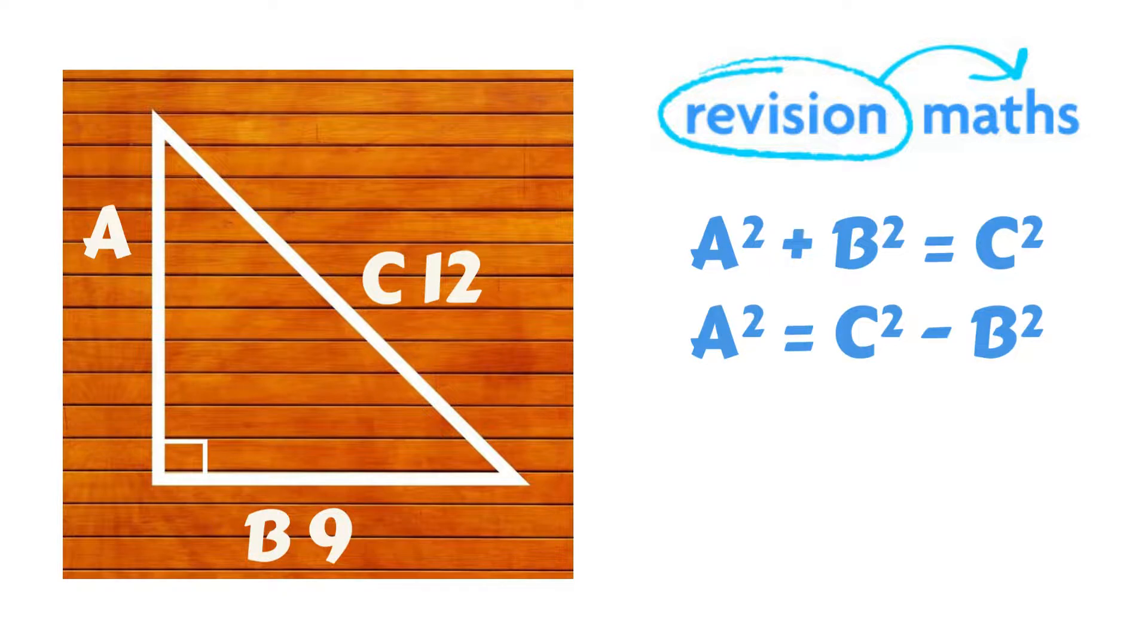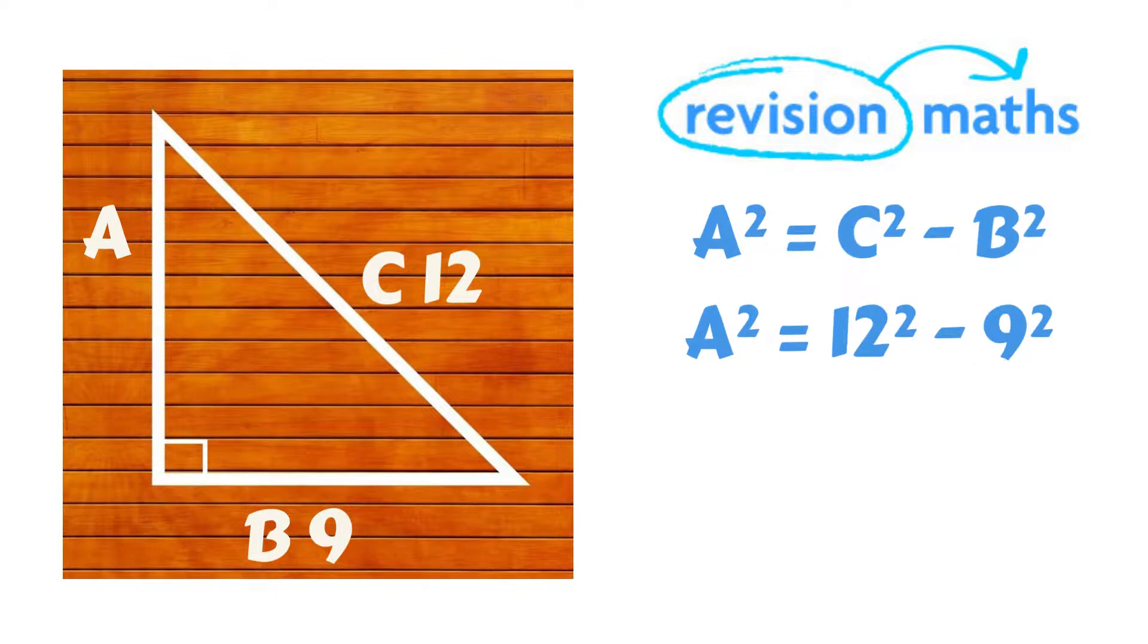So we've rearranged the formula to A² is now equal to C² - B². Putting in the values A² = 12² - 9² which is simplified to A² = 144 - 81 which equals 63.